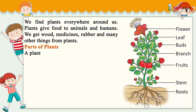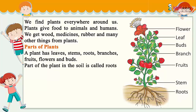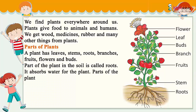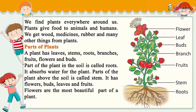Parts of a plant: A plant has leaves, stems, roots, branches, fruits, flowers, and buds. The part of the plant in the soil is called roots. It absorbs water for the plant. The part of the plant above the soil is called the stem. It has flowers, buds, leaves, and fruits. Flowers are the most beautiful part of a plant.